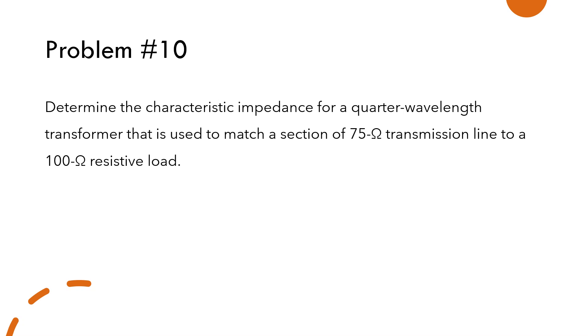Problem number 10. Determine the characteristic impedance for a quarter-wavelength transformer that is used to match a section of 75 ohm transmission line to a 100 ohm resistive load.